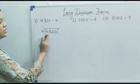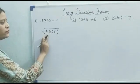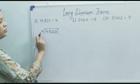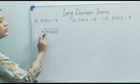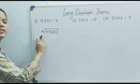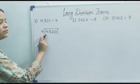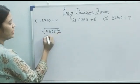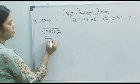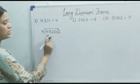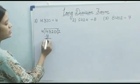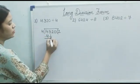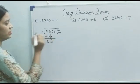Now we compare the first digit of the dividend, that is 4. It is equal to the divisor. So we check where 4 comes in the table of 4 — it comes at 4 ones are 4. So we write 1 above and 4 below. That means 4 ones are 4. Then 4 minus 4 is 0.